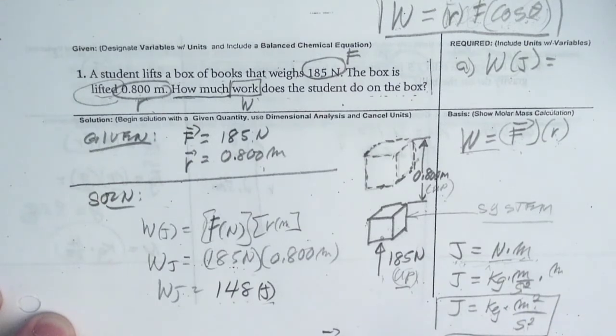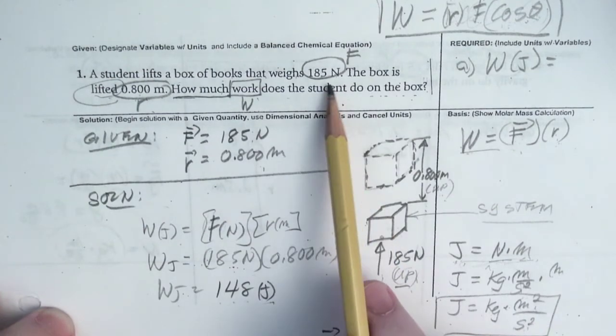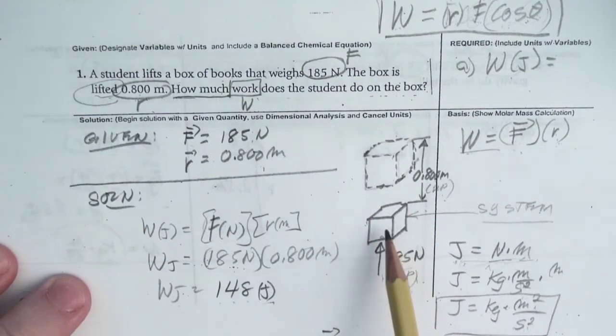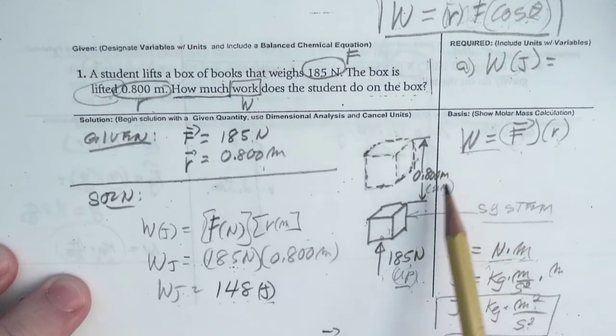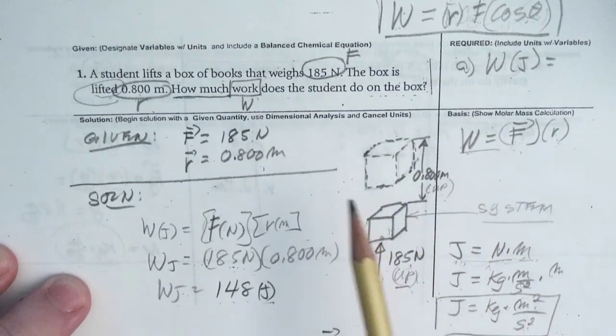Here we are given a box of books that weighs 185 newtons, and it's going to be raised 0.8 meters. That's what's given.